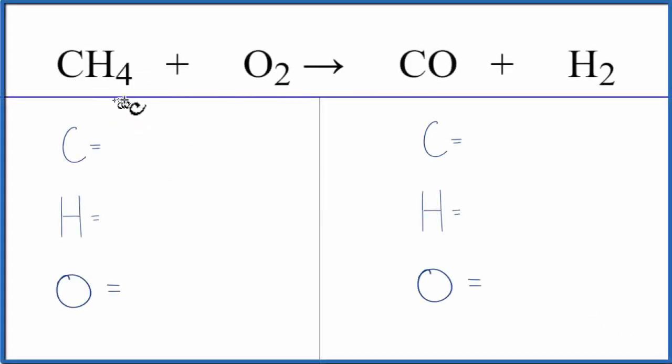In this reaction we have methane and we're adding oxygen and we're getting carbon monoxide and hydrogen. So this is a partial oxidation of the methane. In a combustion reaction you would have the CH4 and the O2 combined to give you CO2 plus H2O. So this is only a partial reduction.